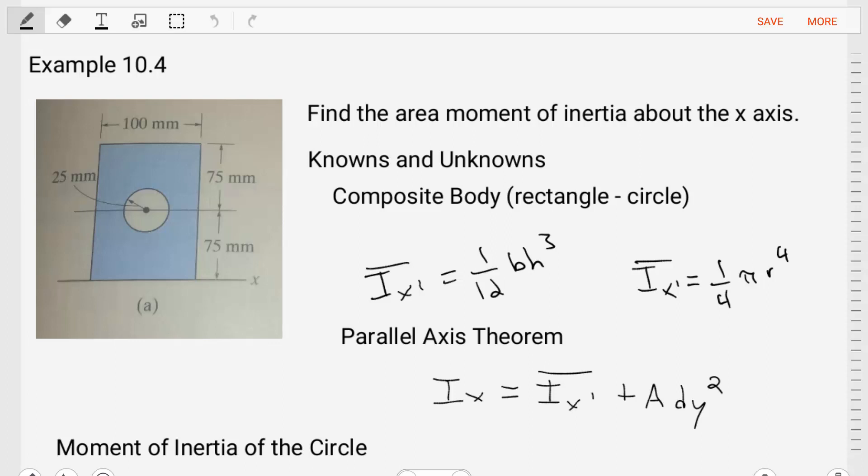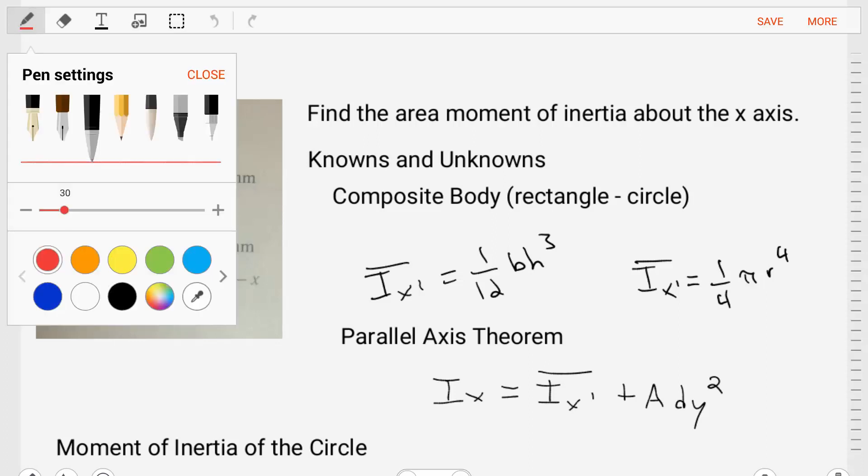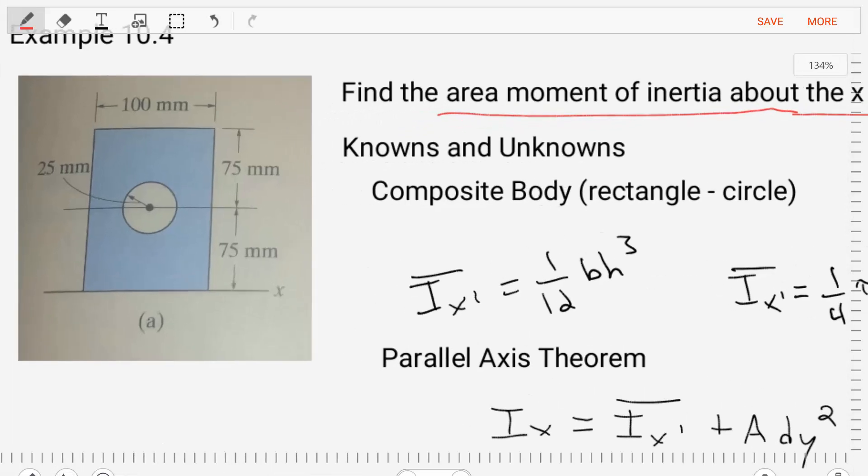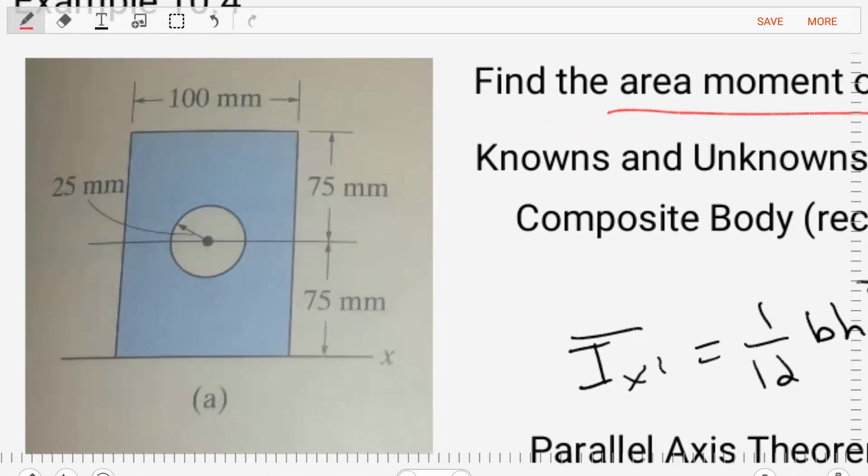This is example 10.4 coming from Hibbler's Statics book, and in this example, we're asked to find the area moment of inertia about the x-axis for the following area.